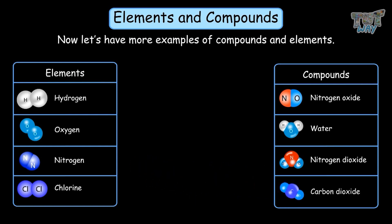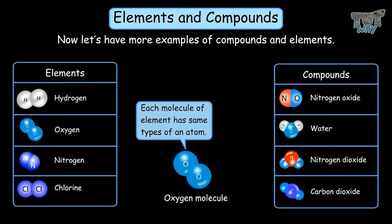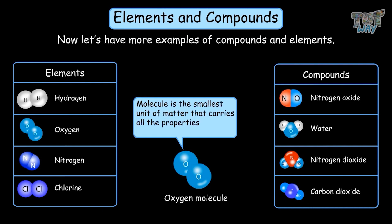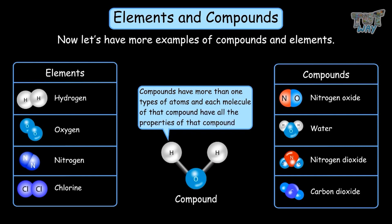So, elements have the same types of atoms — each molecule of an element has the same types of atoms. The molecule is the smallest unit of matter that carries all the properties of that matter. Compounds have more than one type of atom, and each molecule of that compound has all the properties of that compound.